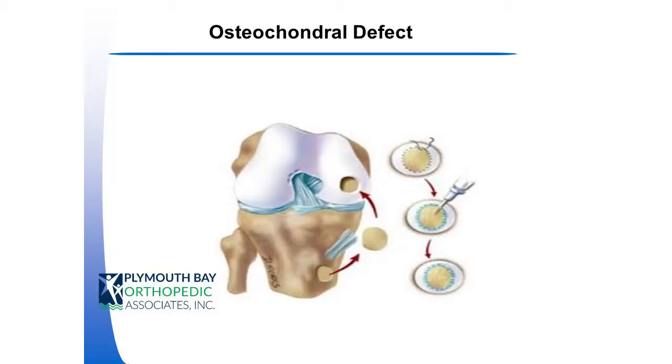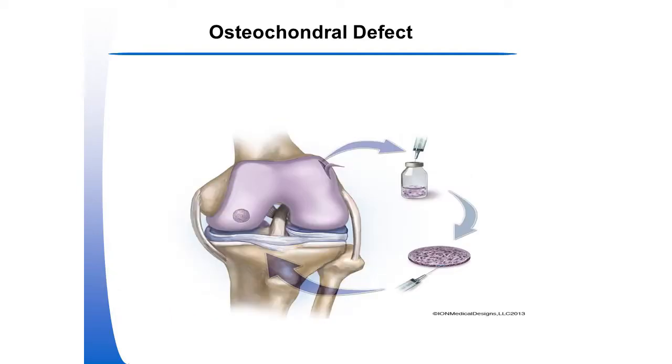When microfracture doesn't work, there are now new options. One of the original approaches uses autologous cartilage — taking the patient's own cartilage, growing it in a lab, and then filling in the defect using a periosteal patch. You harvest a little piece of the periosteum to cover the defect, inject those cartilage cells back in, and it grows new cartilage. It was great, except it was a big surgery with some complications and required two procedures: harvesting the cartilage, sending it to the lab to grow, and then coming back to replant it.